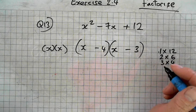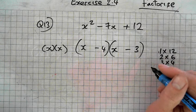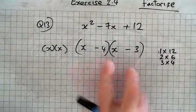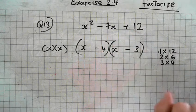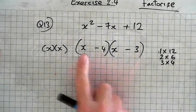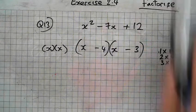Alright. On a number line. Check it on the calculator if you like. And then if I multiply these two, minus 4 times minus 3, I get plus 12. Okay. So that's my answer. It's factorized. That's question 13.